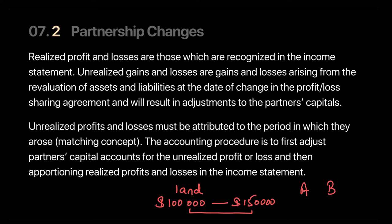Similarly, consider a scenario where partners A, B, and C invested in land together, but now partner C wants to leave the business. Partner C would obviously ask for any gain in the value of the land incurred during that period. Similarly, if there was a loss, partner C should also bear their share of the loss. Whenever there is a structural change in the partnership, we need to account for any unrealized profits and losses that must be attributed in this period.